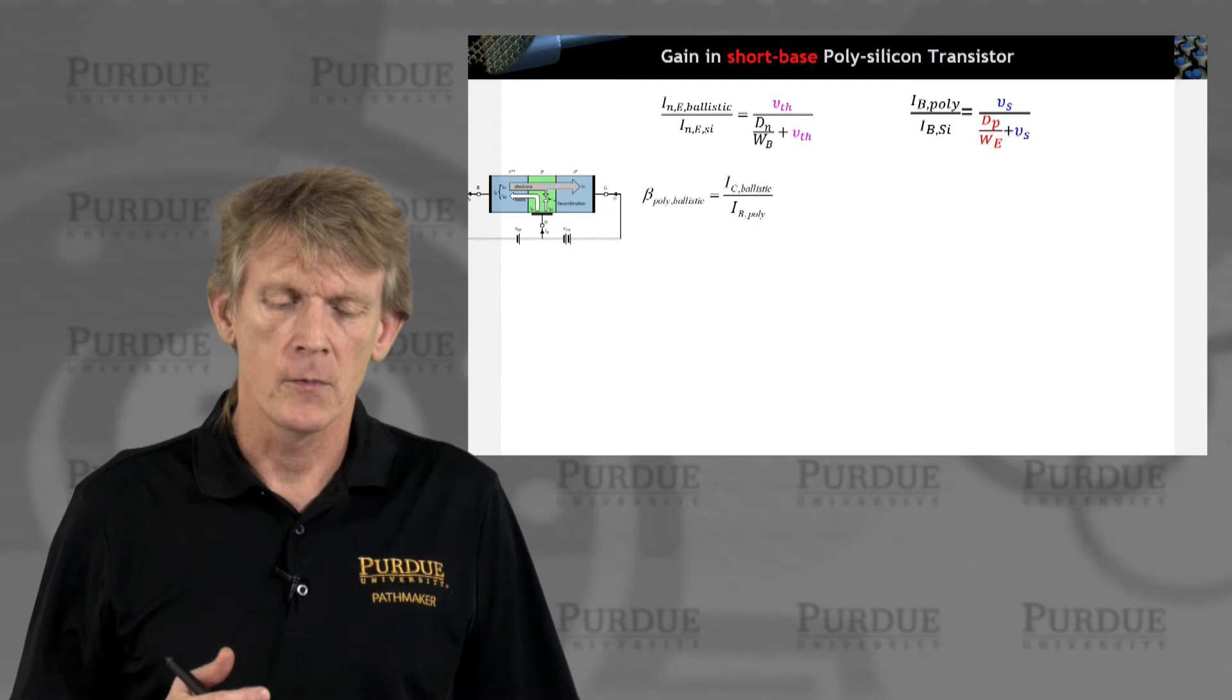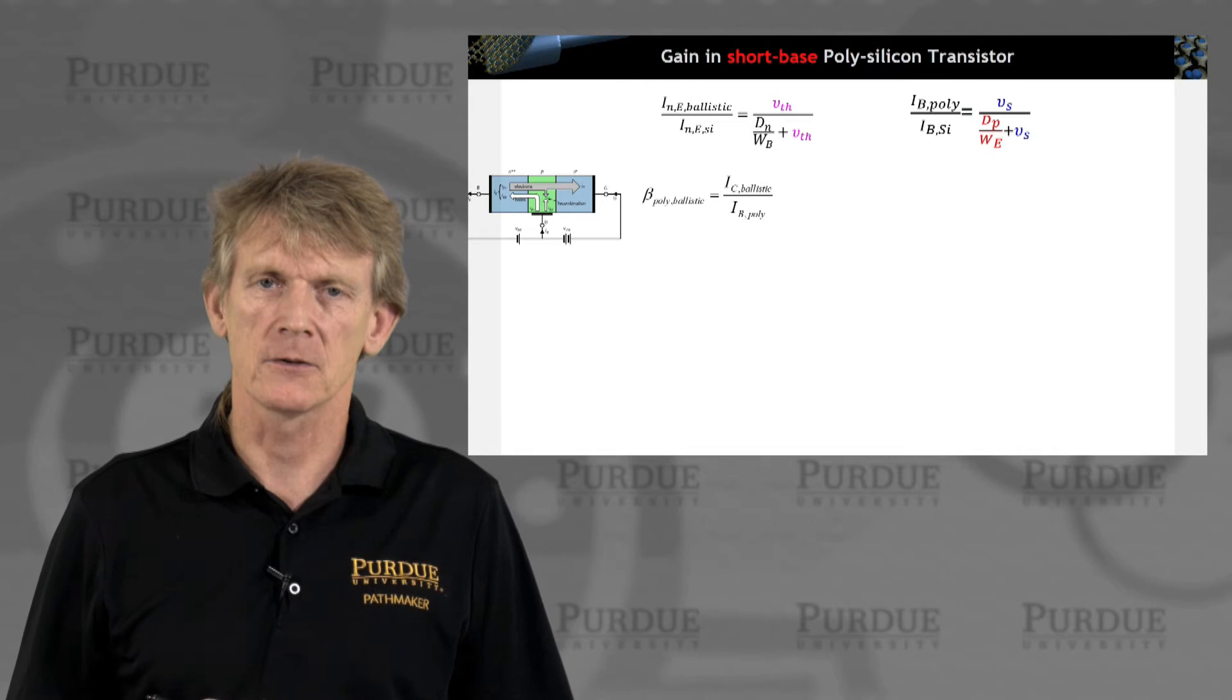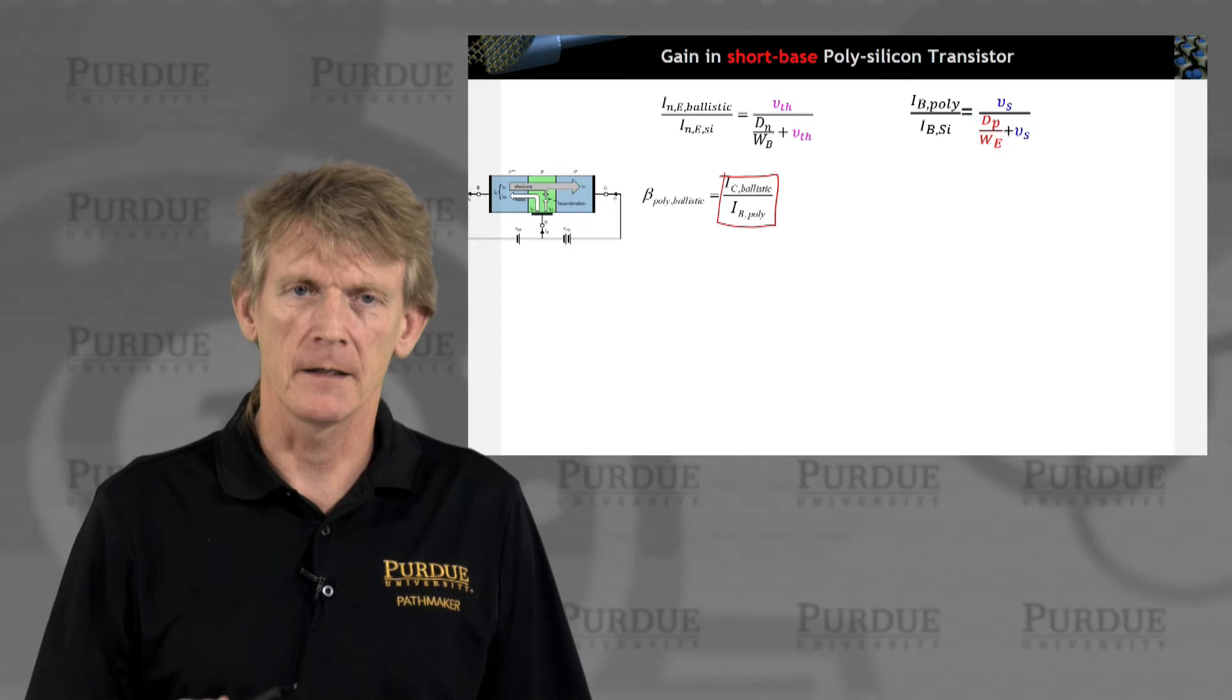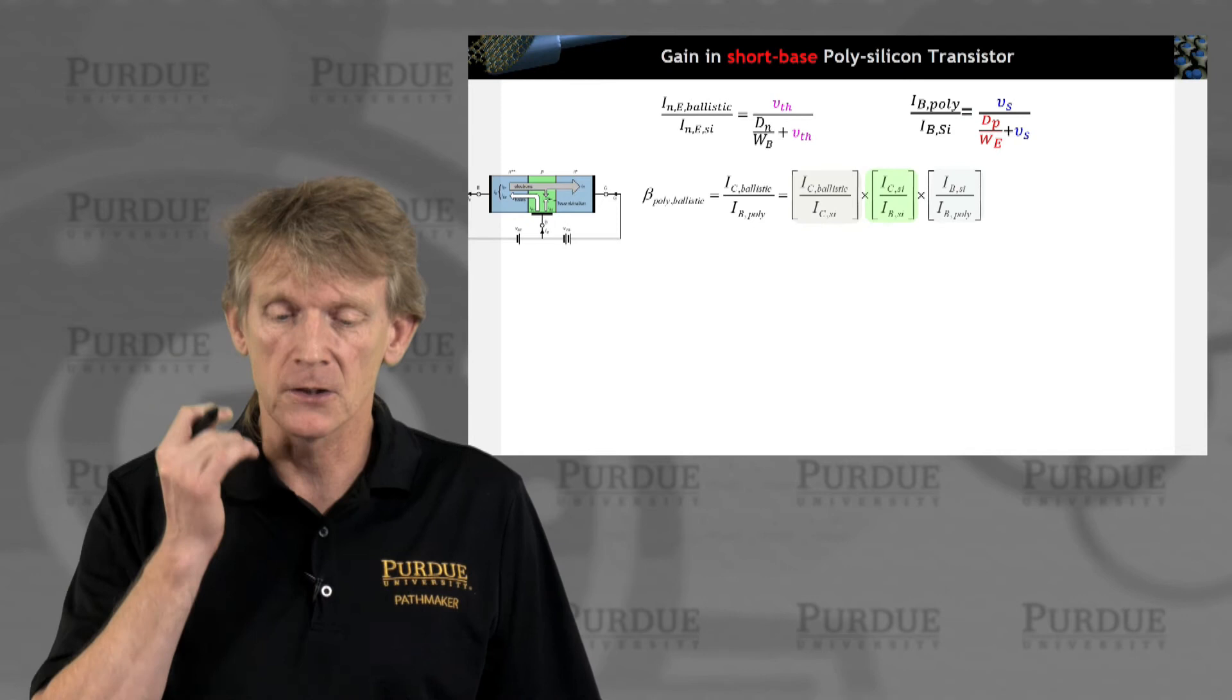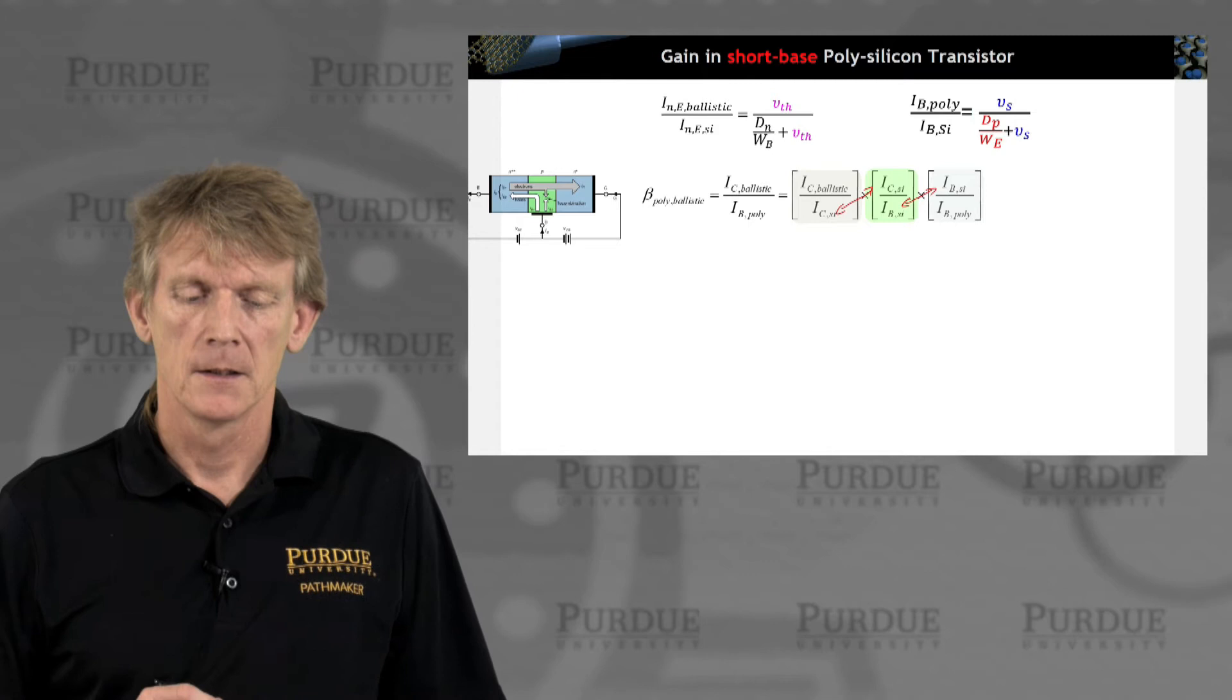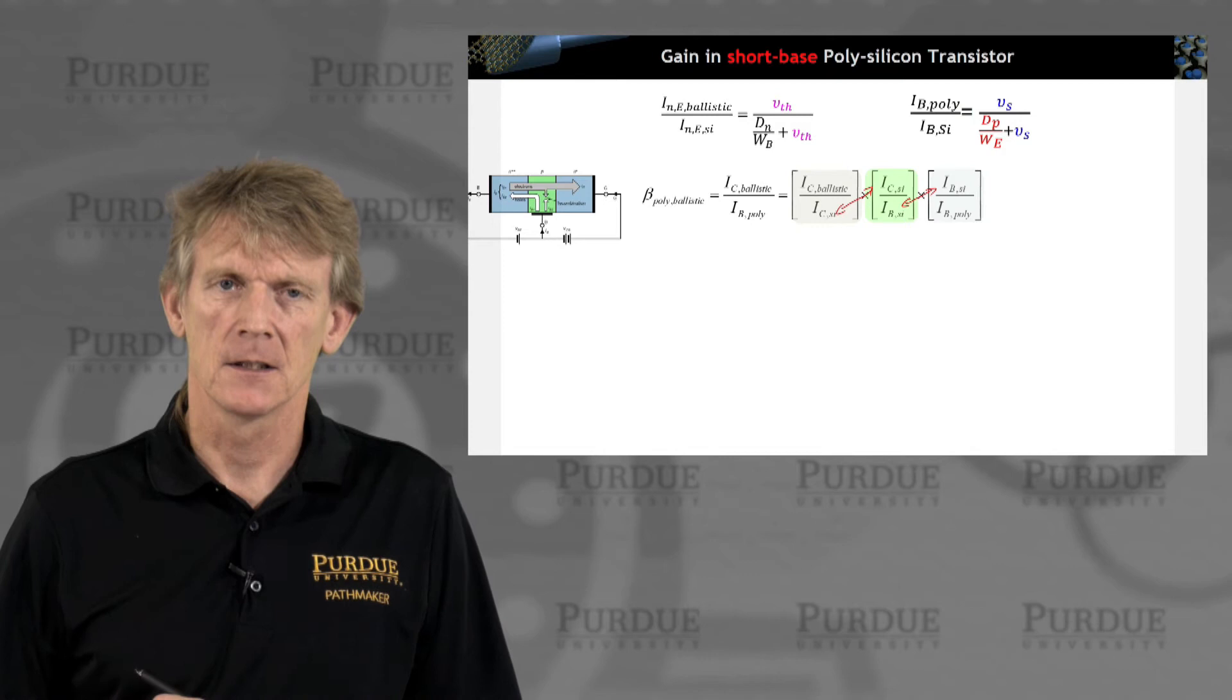So we do the same game of comparing our final design. What does our final beta really depend on if we had a ballistic short base polysilicon transistor? So I'm after the ratio, what I'd really want to understand is what's my beta going to be if I have this design. But I want to compare it based on the numbers that I had before to derive an expression that drives the dependence on this ratio here.